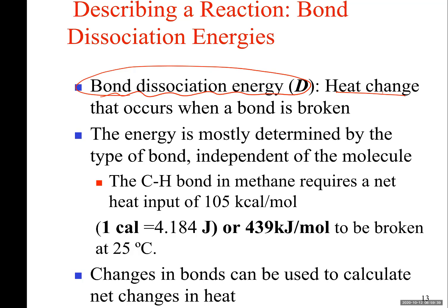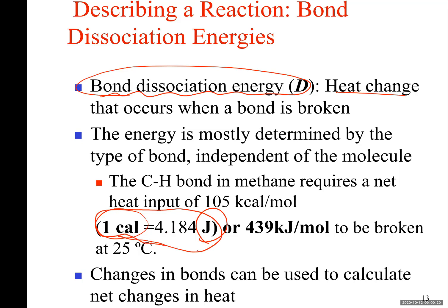So how do we show the amount of bond dissociation energy? What is the unit of energy? If I ask you the energy of a Big Mac, you may say 650 kilocalories per Big Mac. Calorie is one of the units of energy. The international system uses Joules, and these two units are easily interconvertible. Every one calorie is 4.184 Joules, so you can use this equation to convert from calories to Joules or Joules to calories.